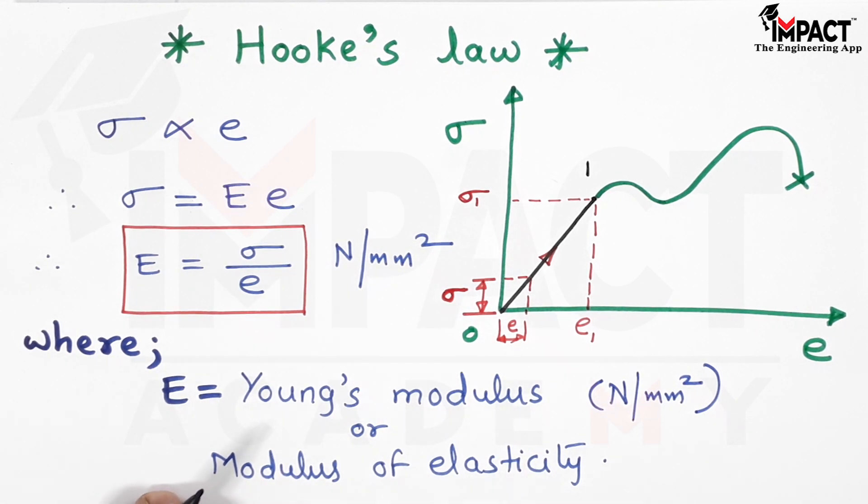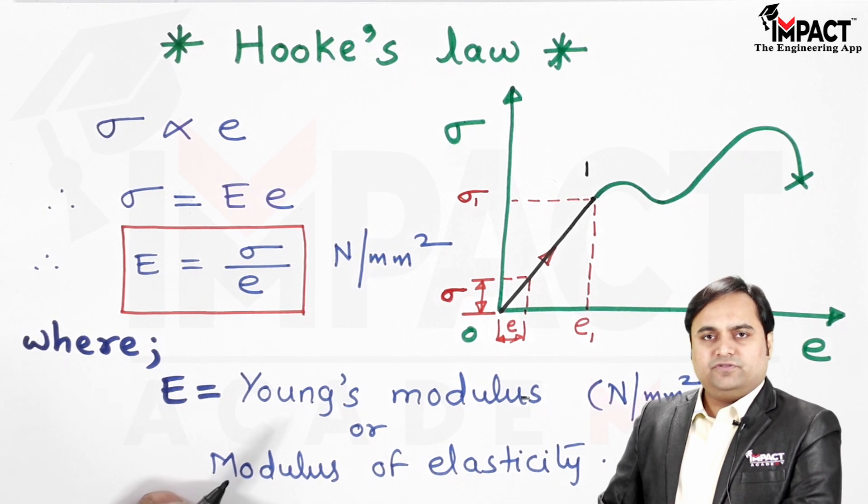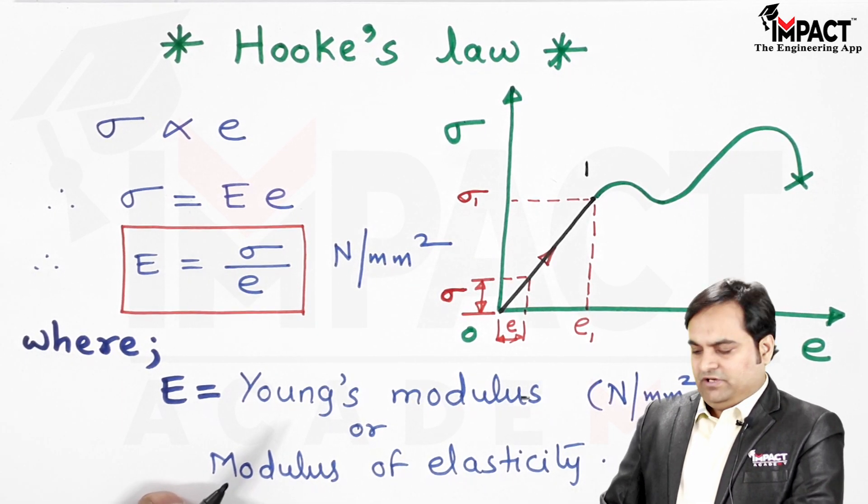Basically, the output from Hooke's law is that we get the formula for Young's modulus or the modulus of elasticity, and that is for ductile material.